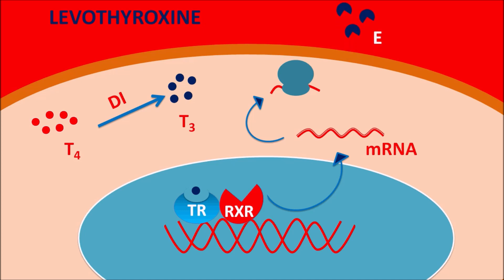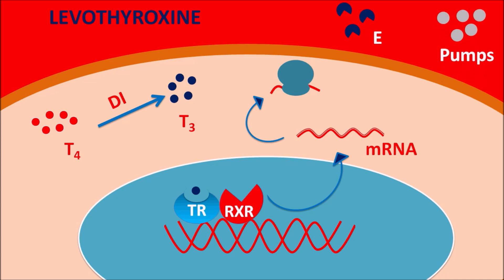Through protein synthesis, levothyroxine produces several types of proteins and enzymes. It releases enzymes that increase metabolism in the liver, including lipid metabolism leading to increased release of free fatty acids, and increased carbohydrate metabolism. It also promotes expression of sodium-potassium exchange pumps responsible for ionic transport, and increases expression of beta-adrenergic receptors, resulting in increased cardiac activation.